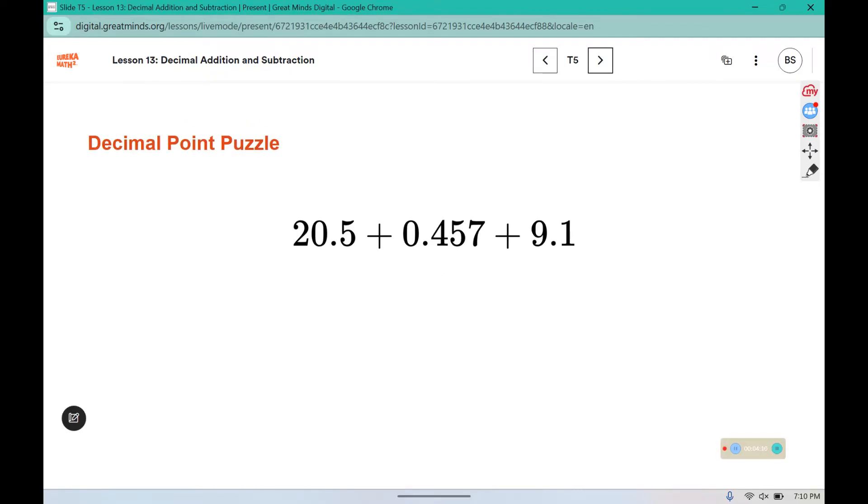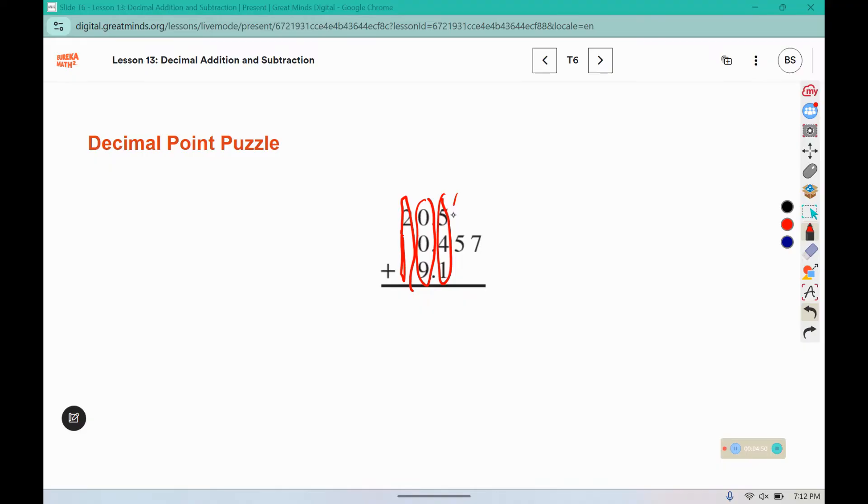Here is the correct place values to end up with 30.057. You can see here we have 20 plus 9 gets us to about 30, and then we have the little bits of decimals left to bump us from 29 up to 30. Here the addends are arranged correctly. The reason that we arrange them this way is so any tens are lined up together, the ones are lined up together, tenths, hundredths, and thousandths get arranged accordingly. So we start by lining up the decimal place.